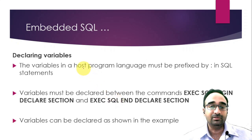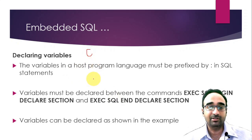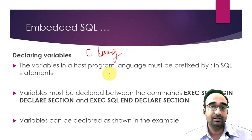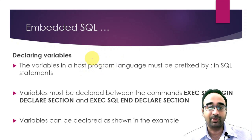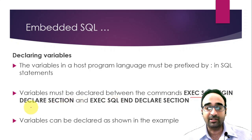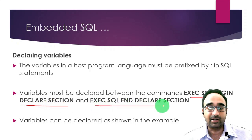Now let's consider C as the host programming language - I will give you the syntax with respect to C. To declare variables using Embedded SQL in C, you will write 'EXEC SQL BEGIN DECLARE SECTION', then declare your variables, and at the end write 'EXEC SQL END DECLARE SECTION'. Pretty simple, right?